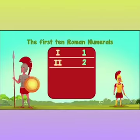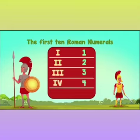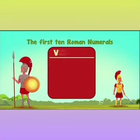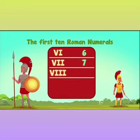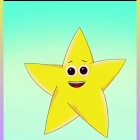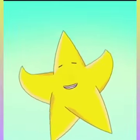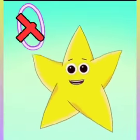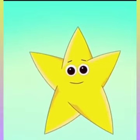The first 10 Roman numerals are: I is 1, II is 2, III is 3, IV is 4, V is 5, VI is 6, VII is 7, VIII is 8, IX is 9, X is 10. An interesting point here kids: there is no letter for the number 0 in Roman numerals as it was not invented at that time.